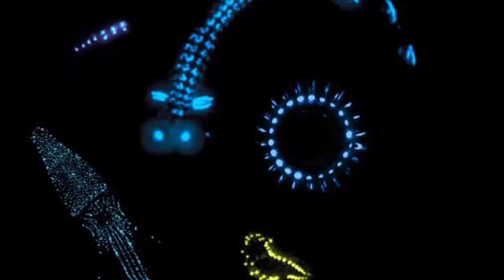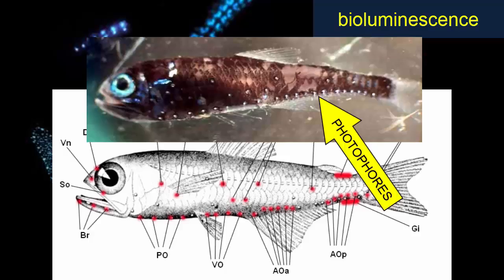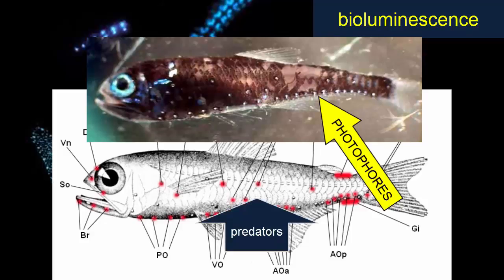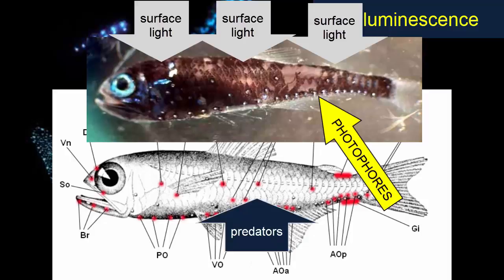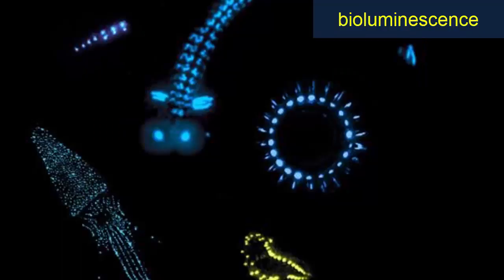Some organisms in the oceans can produce their own light — we call this bioluminescence. It is usually produced by chemical reactions performed either by the organism itself or by bacteria living in an organ inside the organism. Light-producing cells are called photophores. Some fish have photophores lining their bellies for counter-shading: when predators below look upward they see light matching the faint surface light from above, while predators above looking down see a dark top that blends with the darkness below.